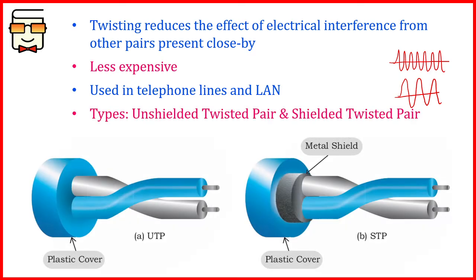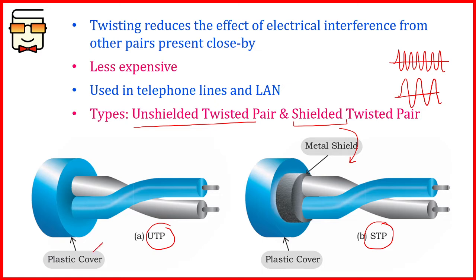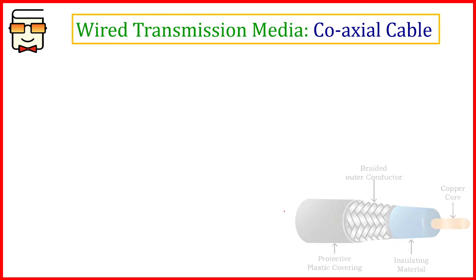A twisted pair cable is of two types. If each pair has a metal covering or shield around it, it is called a Shielded Twisted Pair (STP). If the pair does not have any protective metal covering and is directly covered by plastic, it is called an Unshielded Twisted Pair (UTP). Remember these differences, as they are important for exams.